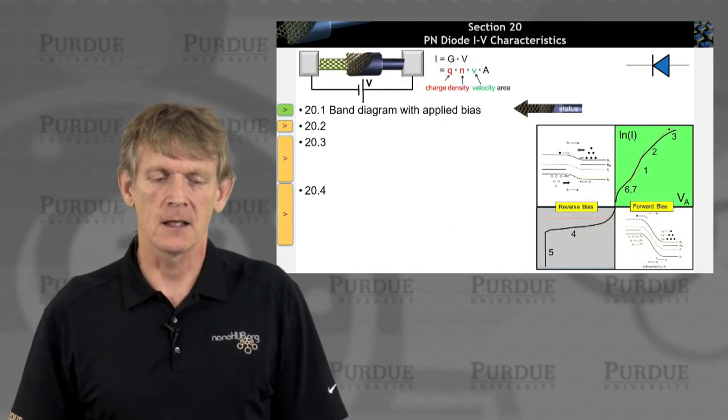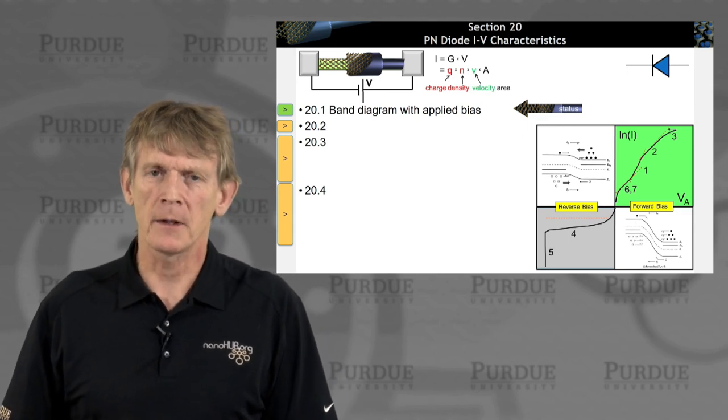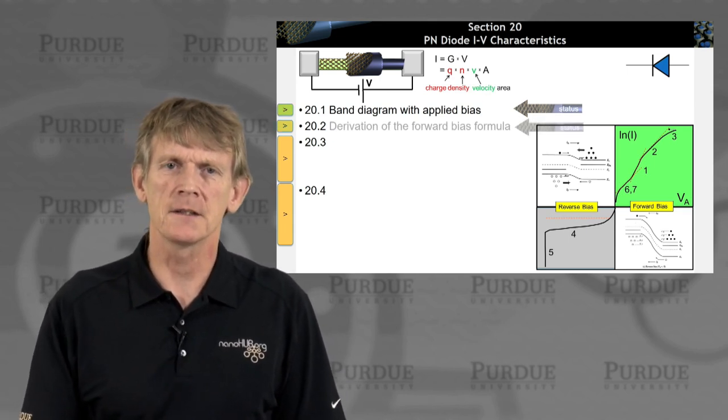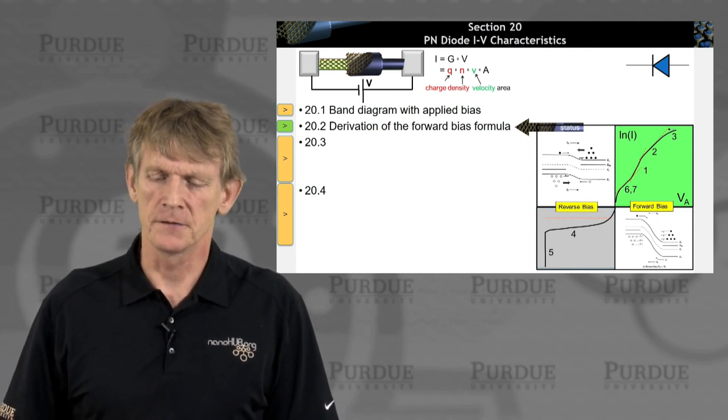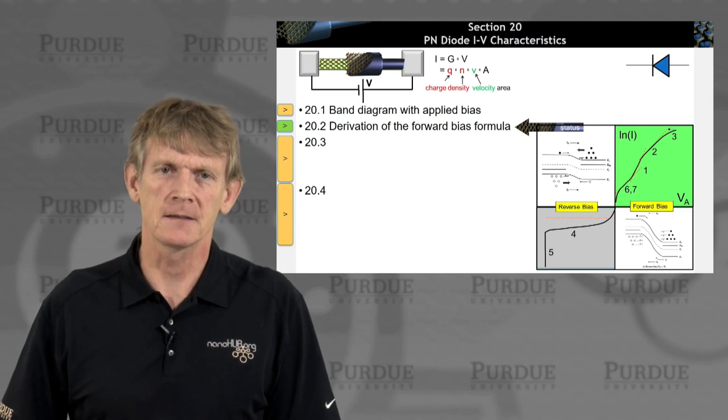So, we've drawn a band edge diagram with the applied bias. Now, we're going to start deriving the simple forward bias formula in the diffusion limit. So, I'll see you in the next segment.